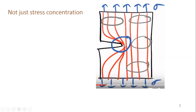Because of the discontinuity, the stress line is bent here — it concentrates. So this area is a stress-raiser, a stress concentration. We have already seen this. What we observe now is that not only stress concentration happens, but there will also be something else.